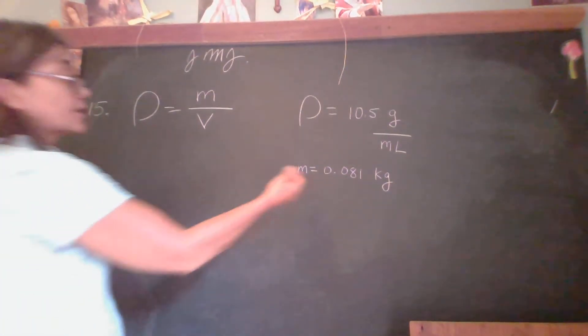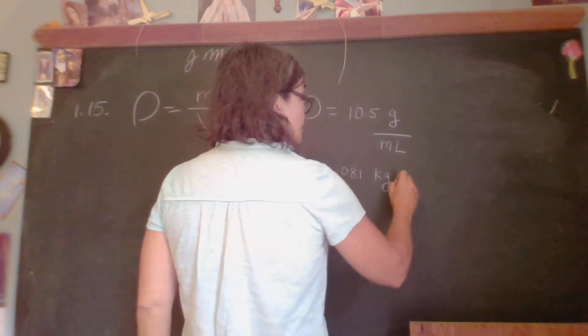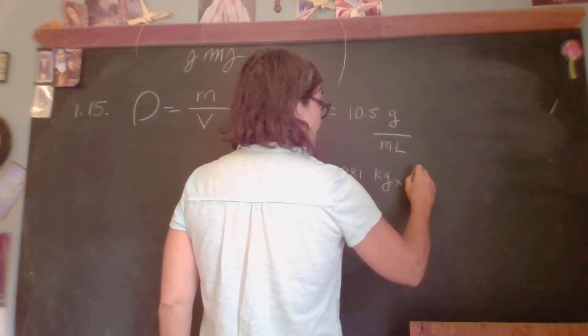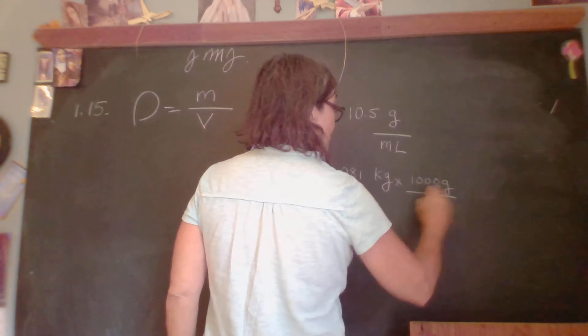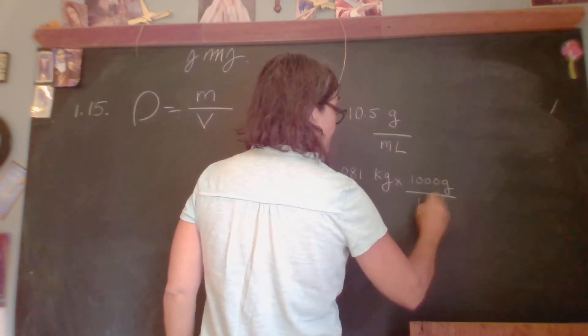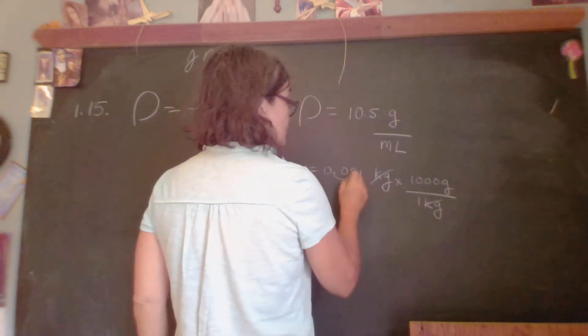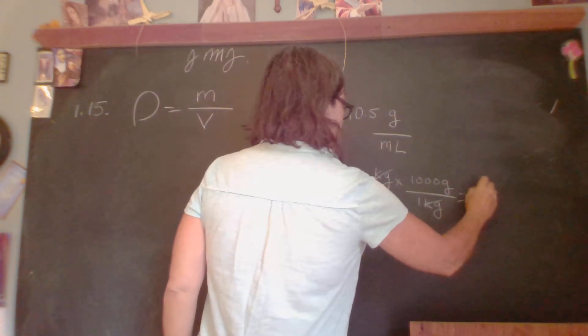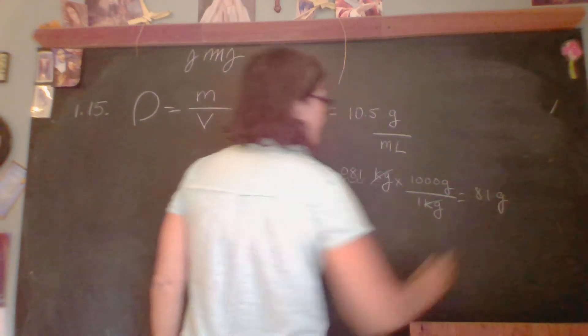We'll need to convert our kilograms into grams. So kilograms times 1,000 grams per kilogram, kilograms will cancel, 1, 2, 3. So we end up with 81 grams.